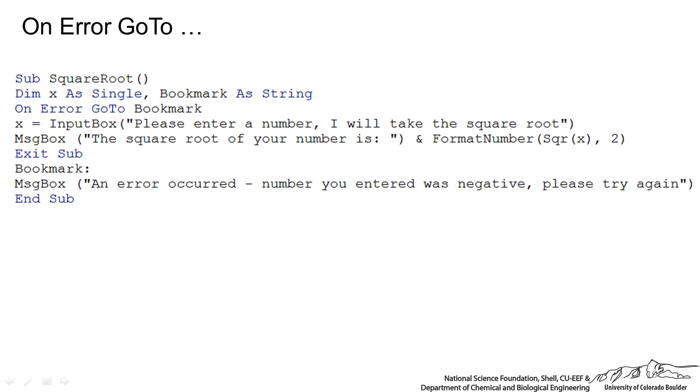A lot of times this go-to is combined with on-error. For example, here I have on-error go-to bookmark. The function here is going to take the square root of a number that the user inputs. If that number is negative that they enter, there's going to be an error, and if you don't have this on-error go-to, it kind of brings up a message box, and it's kind of sloppy in the VBA code. So if it's negative, there's going to be an error. On-error we go-to the bookmark, and the bookmark says an error occurred, number you entered was negative, please try again. So it's kind of more user-friendly.